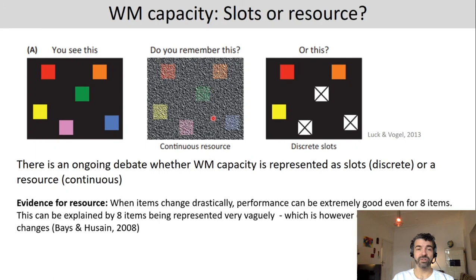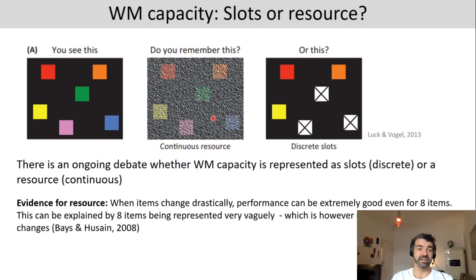Some evidence for the resource model: when items change drastically — for example, from red to blue in the change detection task — performance can be extremely good, better than for a change from red to dark orange, which is closer to the original. Such drastic changes can actually increase the estimated working memory capacity, which can be explained by items being represented vaguely. With a vague representation, a drastic change can still be detected, whereas a more subtle change may not.